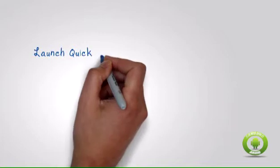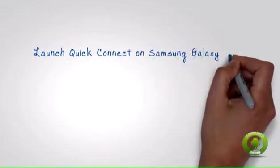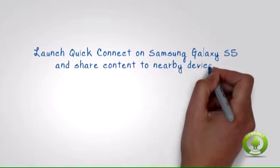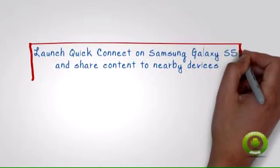Launch Quick Connect on Samsung Galaxy S5 and share content to nearby devices. To be able to connect to other devices using Quick Connect, you need to enable the feature on your phone and connect the device that you want to send some content to. To do that, follow these procedures.